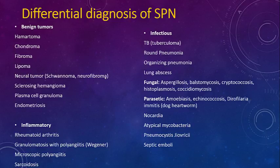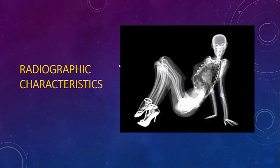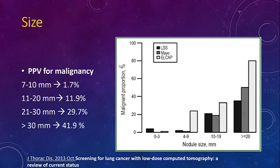Benign causes include benign tumors such as hamartoma, chondroma, or lipoma, as well as inflammatory conditions like autoimmune disease. You can do lab work to confirm — look for rheumatoid arthritis or other autoimmune disease. Infectious causes are also important: ask about TB exposure, travel history, prior significant infections, typical or atypical infections. Vascular causes and other diseases apply too. On X-ray, apparent nodules may not be in the lung at all — such as nipple shadows or skin nodules.